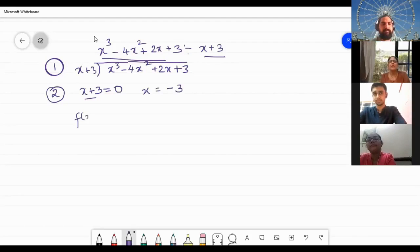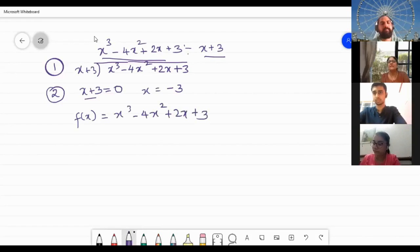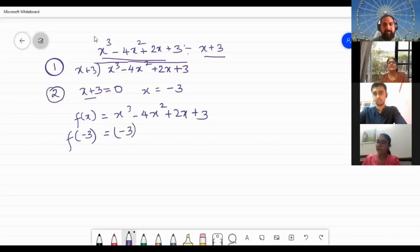Now you have f(x) is equal to x³ - 4x² + 2x + 3. Now substitute wherever x, you write -3 and see. Now x³, wherever x is there I'm writing -3. Plus wherever x is there, what will I write?